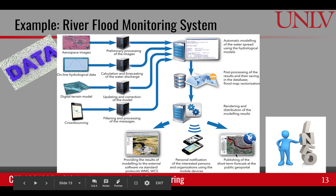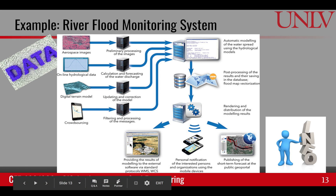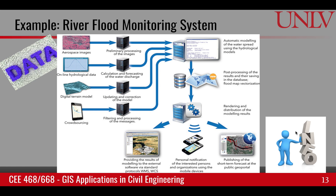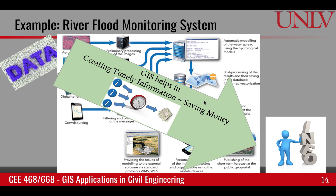If a human was given raw information about a satellite image, elevation, or rainfall, it may not be directly useful. But the computer takes it through a certain process and converts it into data with context. A human consuming this information can then make decisions — whether there could be a potential flood or weather event requiring action. GIS helps us create timely information which can translate into saving money.